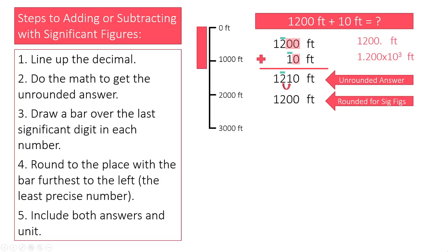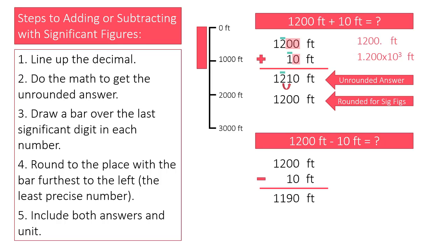Let's try a subtraction example, subtracting 10 feet from 1,200 feet. First, I'll line up the decimals, then I'll do the math to get the unrounded answer. Now I can draw my bars over the last significant place in each number, and round to the place with the bar farthest left, which is the least precise number. That will be the 1 in the hundreds place.